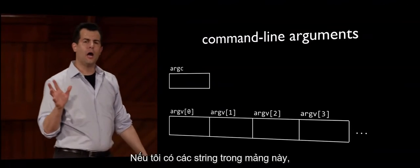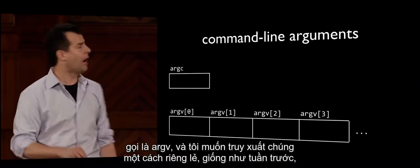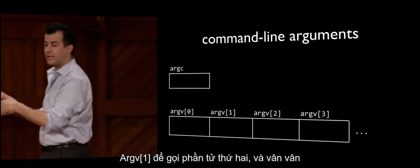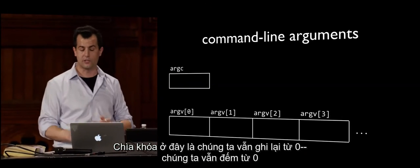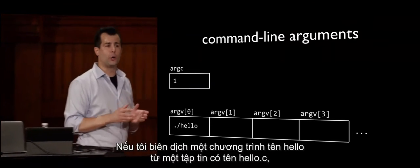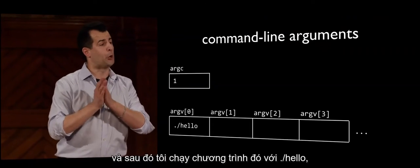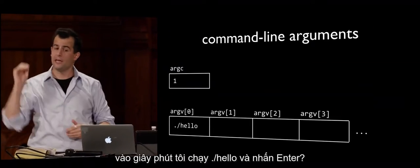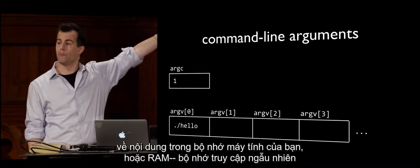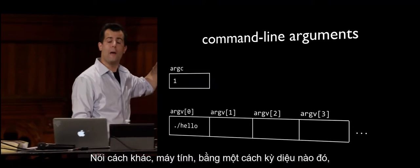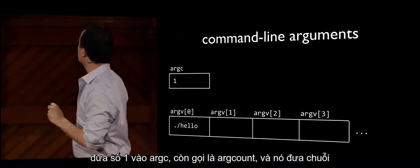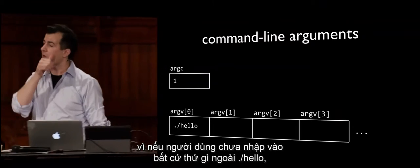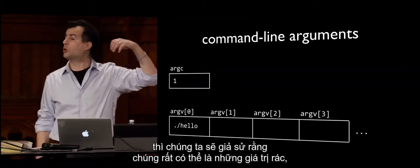Let's be more precise. If I compile a program called hello and run it with dot slash hello, the computer puts the number 1 in argc and literally the string dot slash hello in argv bracket zero. What's in argv bracket 1 or 2 or 3 — since the user hasn't typed anything else — we assume those are garbage values and we shouldn't look at them.